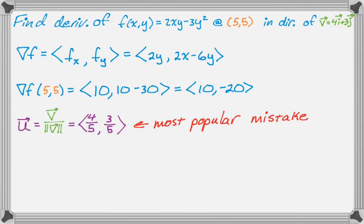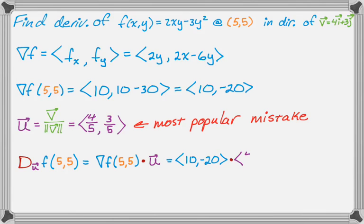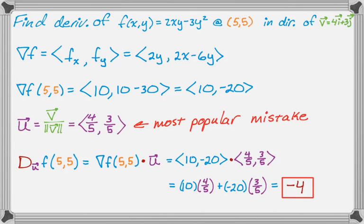And then for this problem, to finish it off, we're going to write the correct notation, and then compute our dot product. So we're going to get (10, -20) dot (4/5, 3/5). And if you work that out, 10 times 4/5 plus -20 times 3/5, which ultimately gives us -4. So that's the directional derivative.